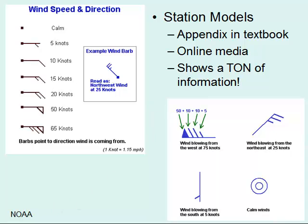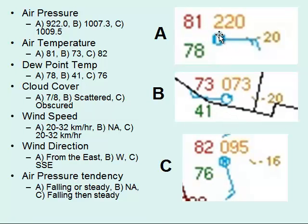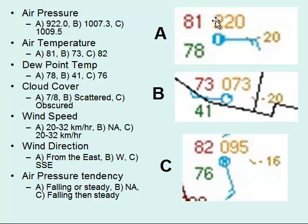You can use the feather that sticks out of the circle of the station model to determine wind speed and direction. The center circle tells you cloud cover, and the numbers around it tell you air pressure, air pressure tendency, temperature, and dew point. If we look at station model A, the air pressure reads 220. To decode it: if the first number is not zero, add a nine to the front and a decimal place, giving us 922.0 millibars. In station model B, the first number is zero, so we add 10, giving us 1007.3. Station model C similarly gives us 1009.5.